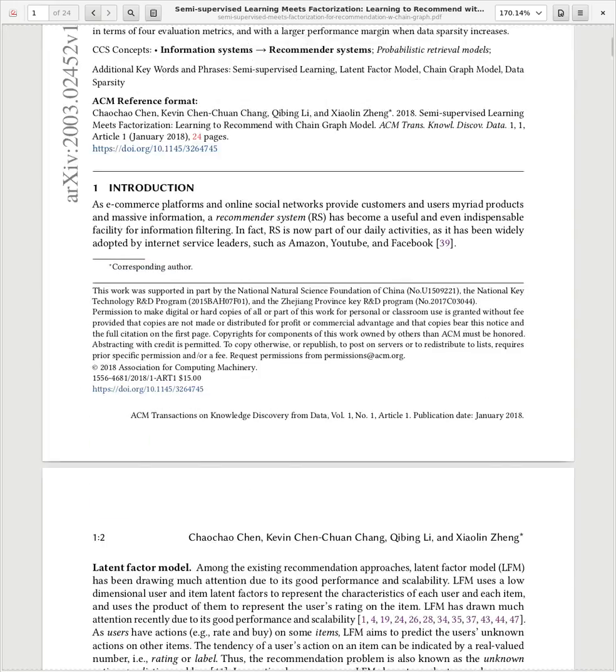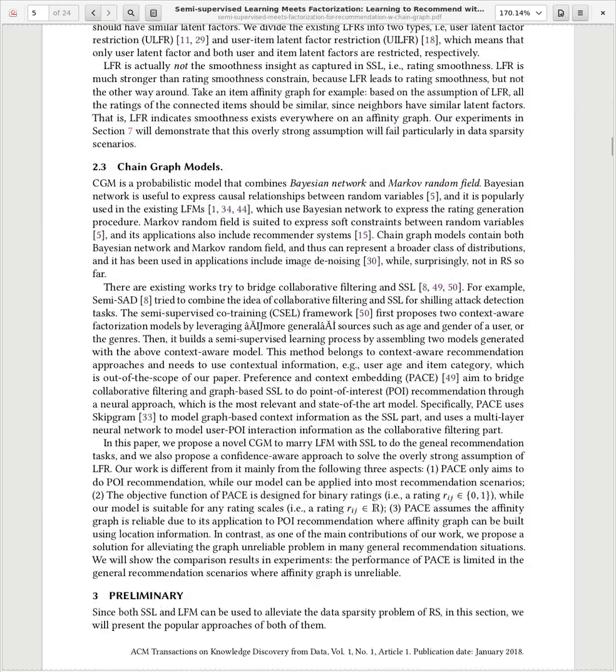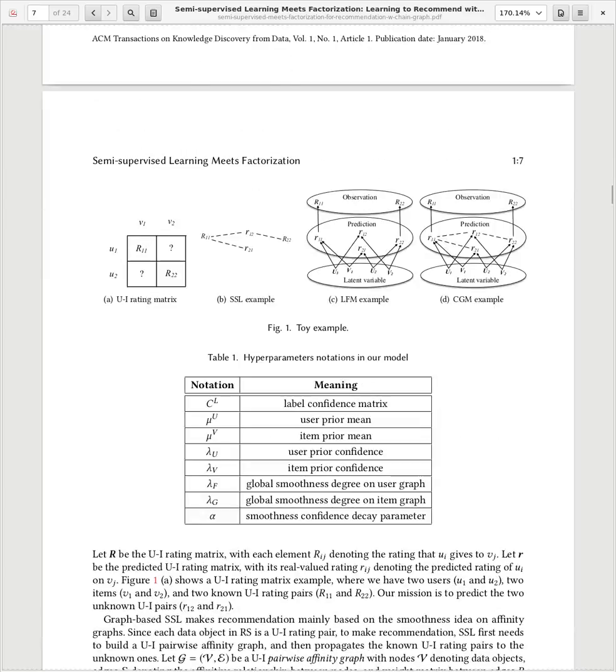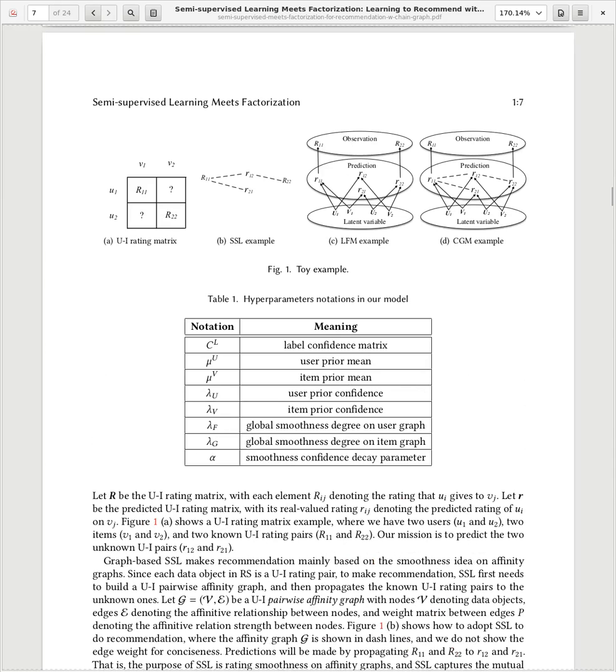In this paper, what they do is that they combine latent factor models, this matrix factorization. And after that, they apply the smoothness based on similarity between items and users. And on top of that, they add some sort of decay. The further you are in this similarity graph, the less you are from certain rating,